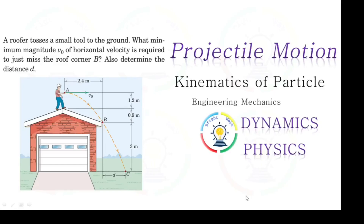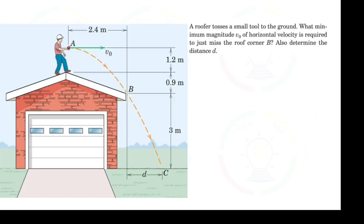In this video we will discuss projectile motion examples with some illustration. The question states that a roofer tosses a small tool to the ground. What is the minimum magnitude of the horizontal velocity required to just miss the roof corner B? We also need to determine the distance D.